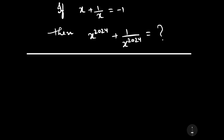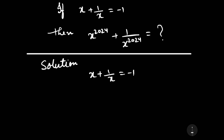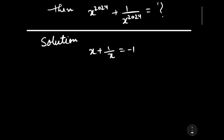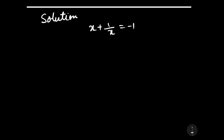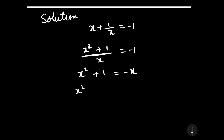Now let us start to solve this question. It is given that x plus 1 by x is equal to minus 1, and we have to find the value of x to the power 2024 plus 1 upon x to the power 2024. To solve this, we need to simplify the given equation. We can write it as x squared plus 1 upon x is equal to minus 1, and further as x squared plus x plus 1 is equal to 0.